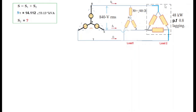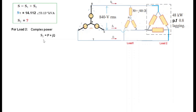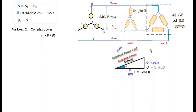For S2, the complex power formula is S = P + jQ, where P is real power in kilowatts and Q is reactive power in kVAR. We have P = S cos(theta) and Q = S sin(theta).